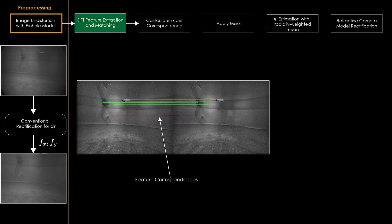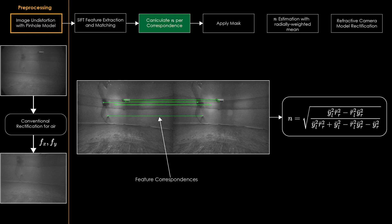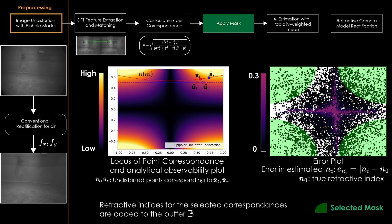We match the SIFT features to estimate refractive index for every point correspondence. Due to the nature of refractive distortion, an ideal epipolar line is warped into a hyperbola corresponding to the refractive index of the medium. We study the observability of refractive index and exclude the region with poor observability by applying a mask.